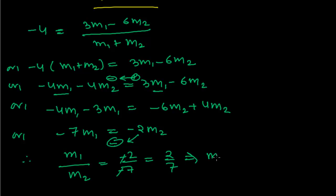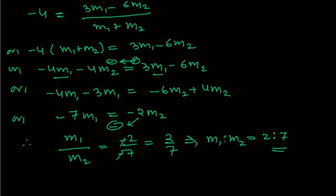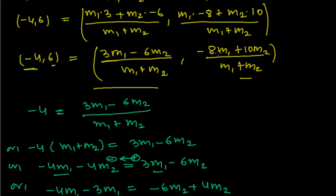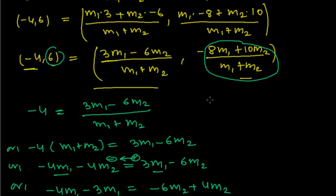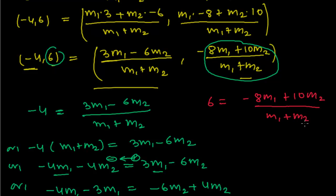So what we got for the ratio? M1 : M2 = 2 : 7. This is our required ratio. But friends, we should not be sure yet — we need to verify this answer using the y-part. Now we will be verifying with the y-part. Let me do it in red color. Y-part: 6 = (-8M1 + 10M2) / (M1 + M2).